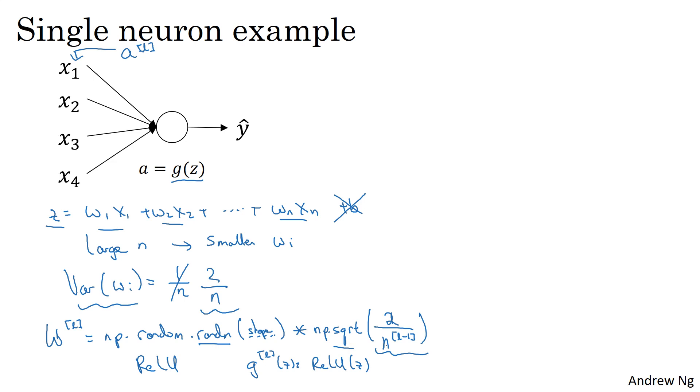And the reason I went from n to this n superscript l minus 1 was, in this example, with logistic regression, which has n input features, but in the more general case, layer l would have n l minus 1 inputs, each of the units in that layer.